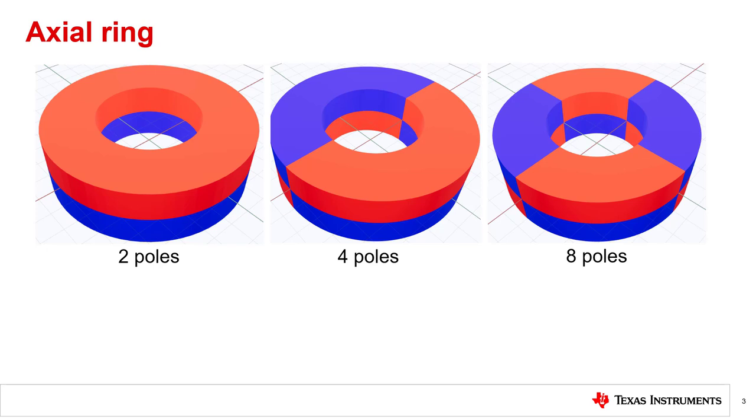When creating a multipole axial ring magnet, the amount of poles is incremented by multiples of four. On the multipole axial ring magnet, the number of poles will vary if you are looking at the magnet from the side view or the top view.